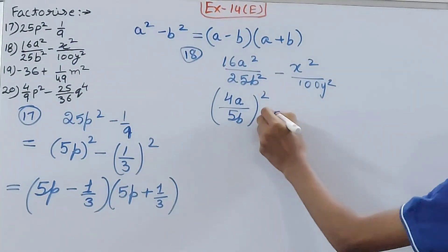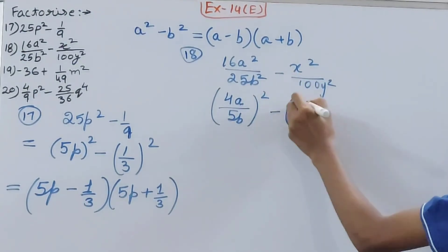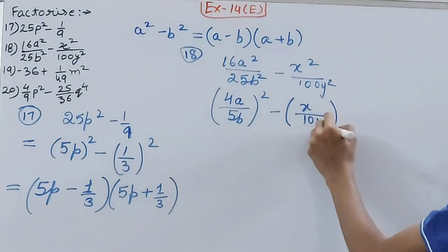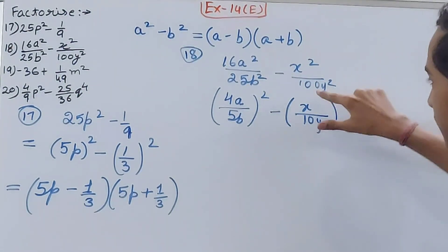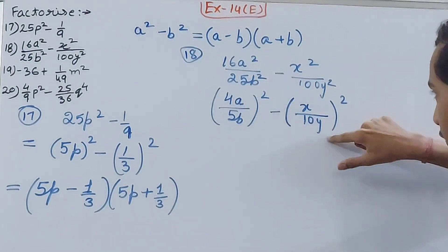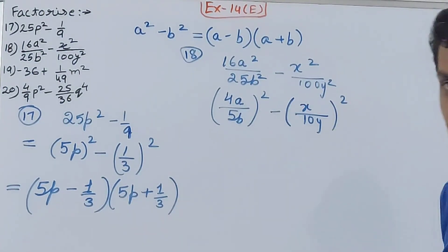Now come to the second term. x² can be written as square of x, and 100y² can be written as (10y)². If you will open this, x² will give you x², 10² will be 100, y² will be y².